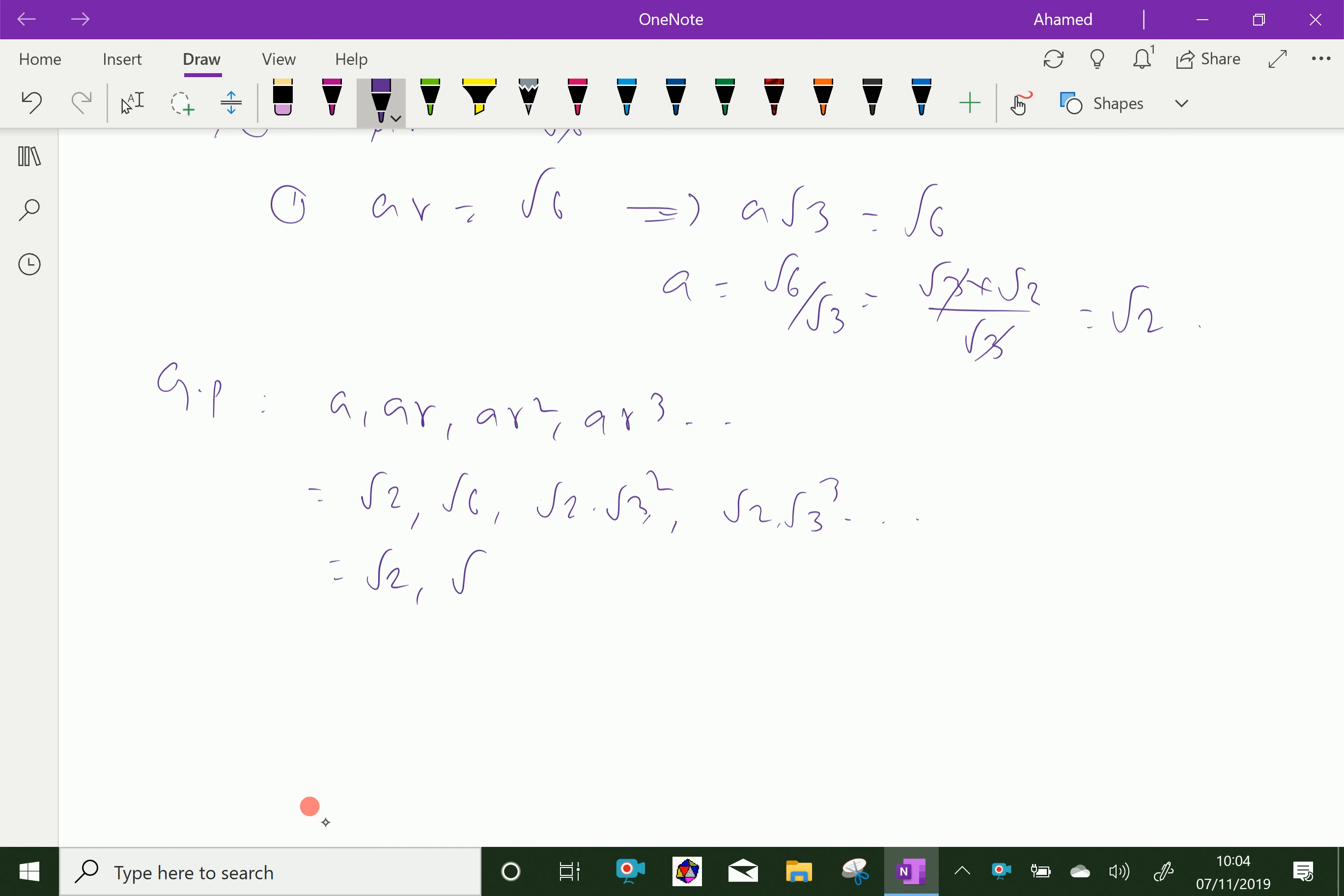Which equals √2, √6, and (√3)² is 3, so 3 times √2 is 3√2. Then (√3)³ is 3√3, which gives 3√6 as the fourth term, and it continues increasing.